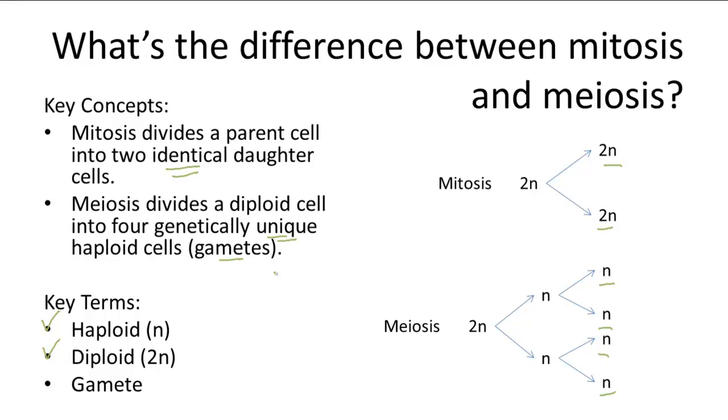Whereas meiosis would be used to produce gamete cells or sex cells, so the sperm and egg cells.